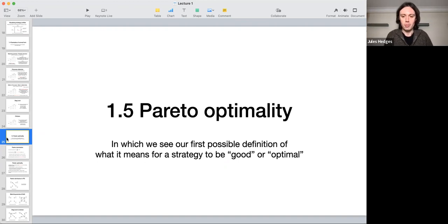So in this video, we're looking at Pareto optimality, which is one of several answers for what it means for a strategy profile to be optimal. This isn't the main one. The main one is called a Nash equilibrium, which will be the subject of a few videos next week.